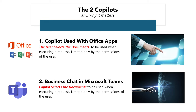However, in Microsoft Teams Business Chat, Copilot operates differently. It autonomously accesses any document the user's permissions allow, making its own decisions on what information to use. This broader access can lead to unintended data exposure. Many Copilot licensees naturally assume they can control Copilot's access in Teams just as they do in Office applications. Unfortunately, this assumption is incorrect and can result in problematic outcomes if not properly managed. Microsoft emphasizes the importance of configuring and managing permissions meticulously to safeguard sensitive information. Organizations must educate their employees about these differences and implement robust data governance policies.